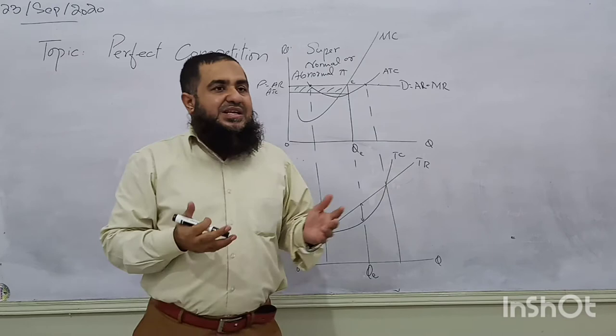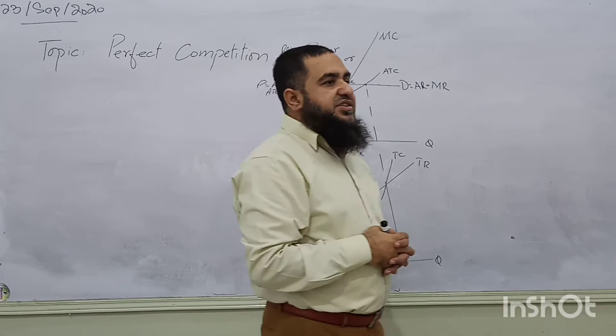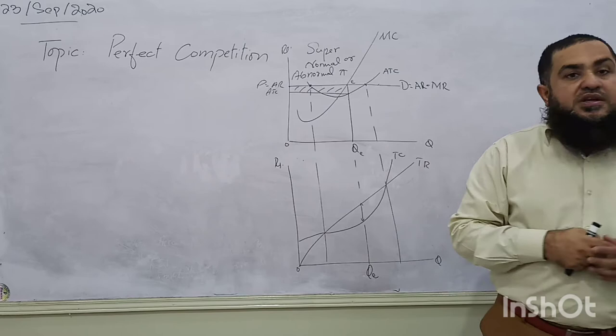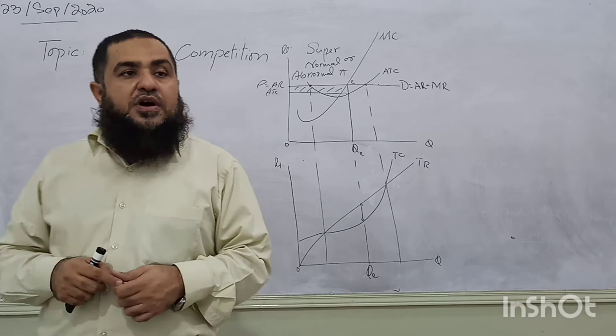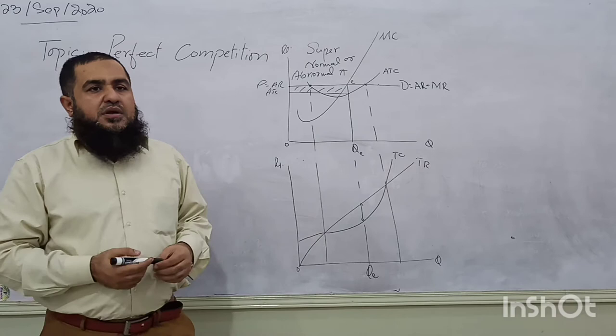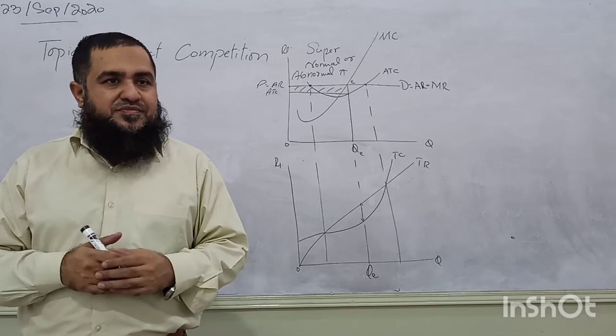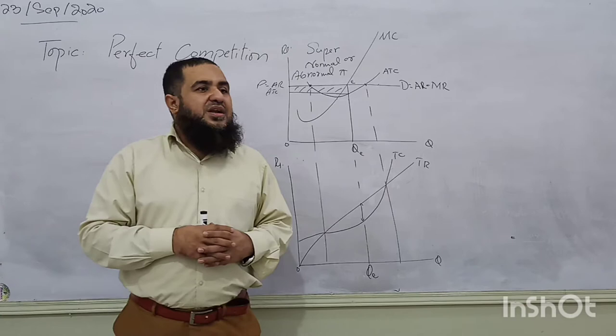When the existing firm is earning supernormal profit, and the exit-entry condition is free, all potential producers look at this and see that existing firms are earning supernormal profit — so they will jump into this market because there are no barriers. For example, if our school is earning profit, many people will start their own schools. When there are many schools, their profits are divided among each other, and after adjustments have taken place, all firms will be earning normal profit.